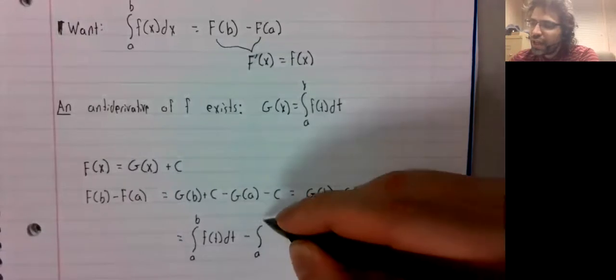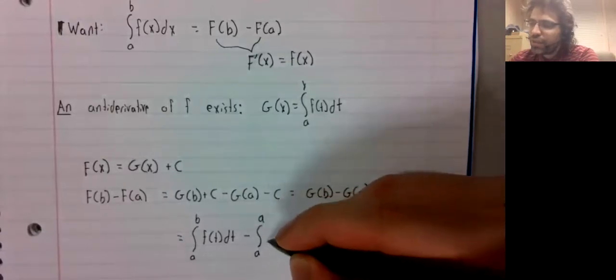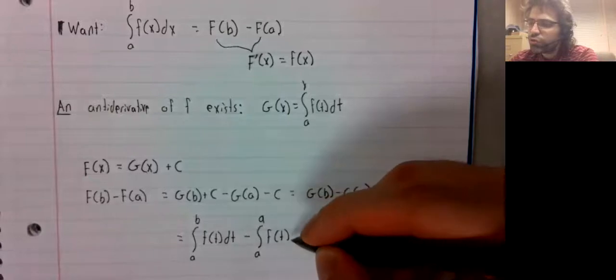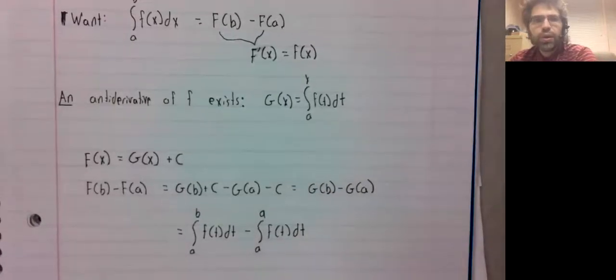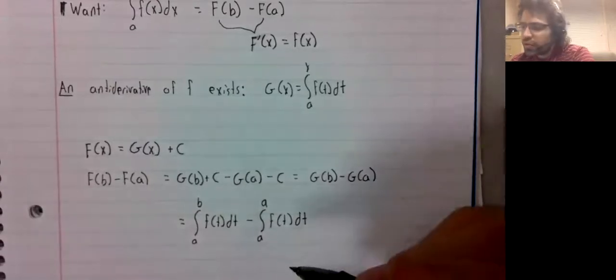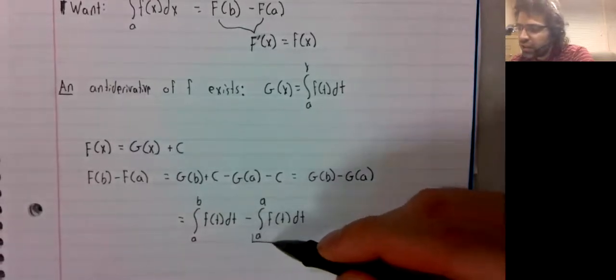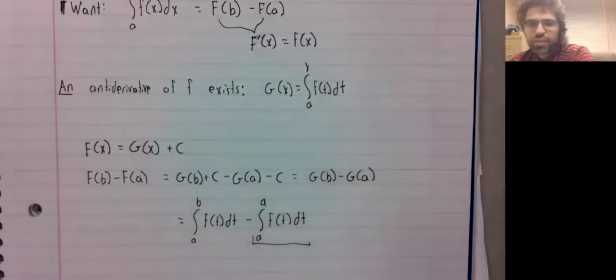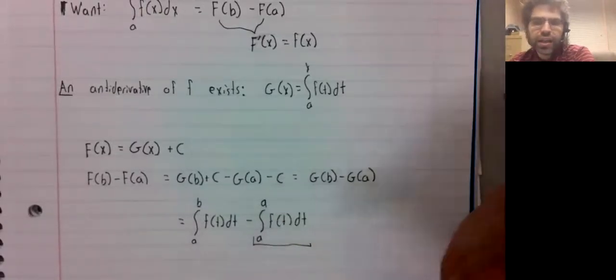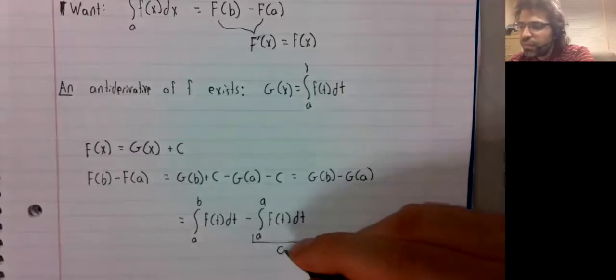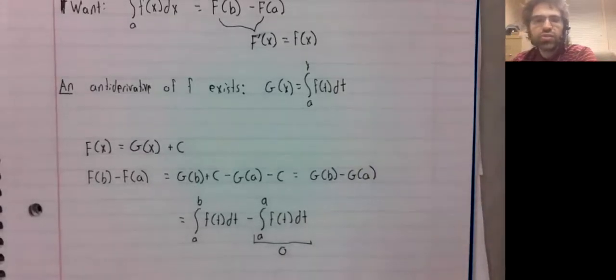g of A is this integral. And one of our theorems we have stated says that any definite integral from A to A is just zero.